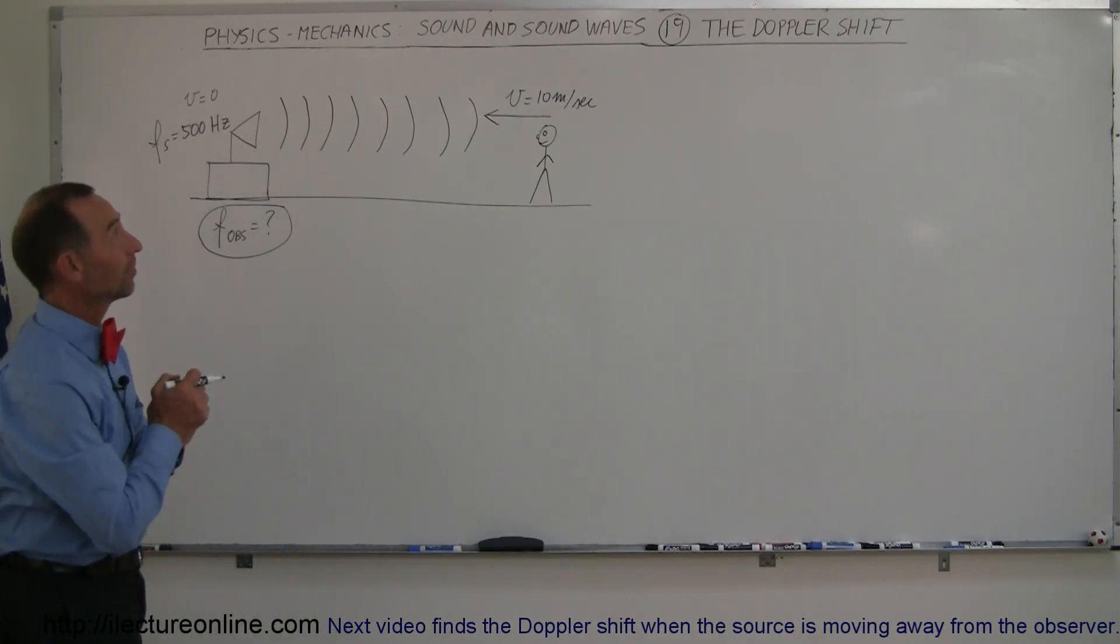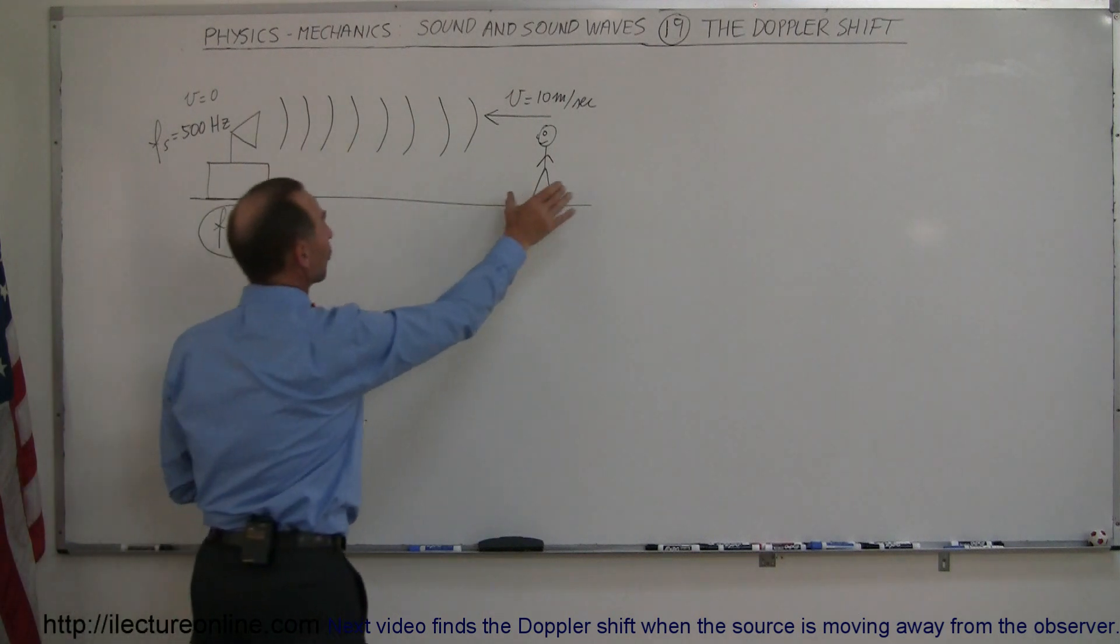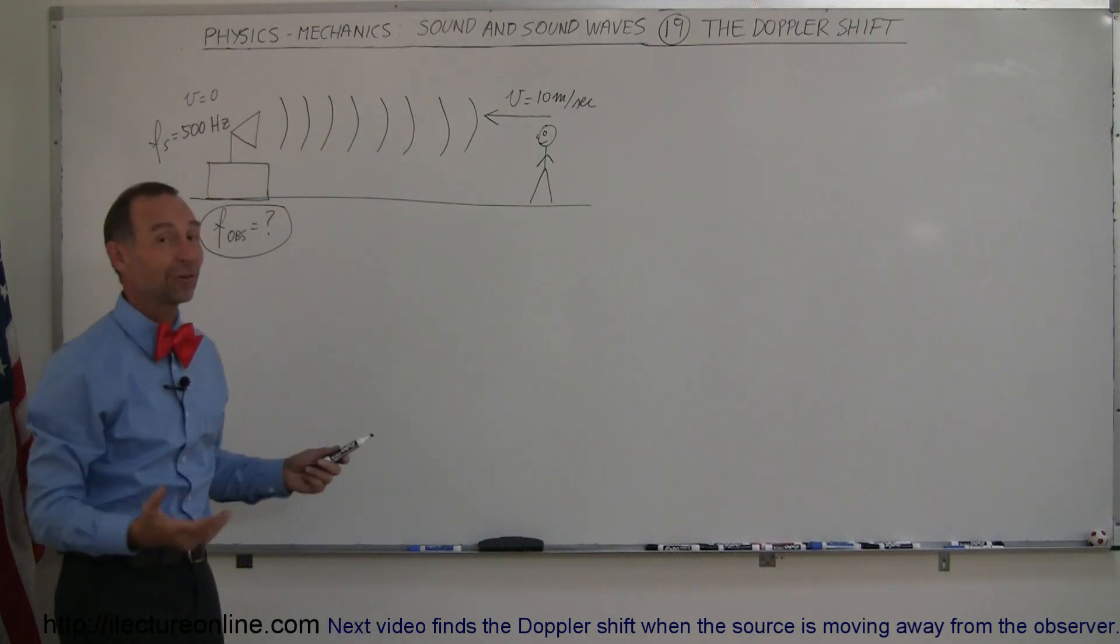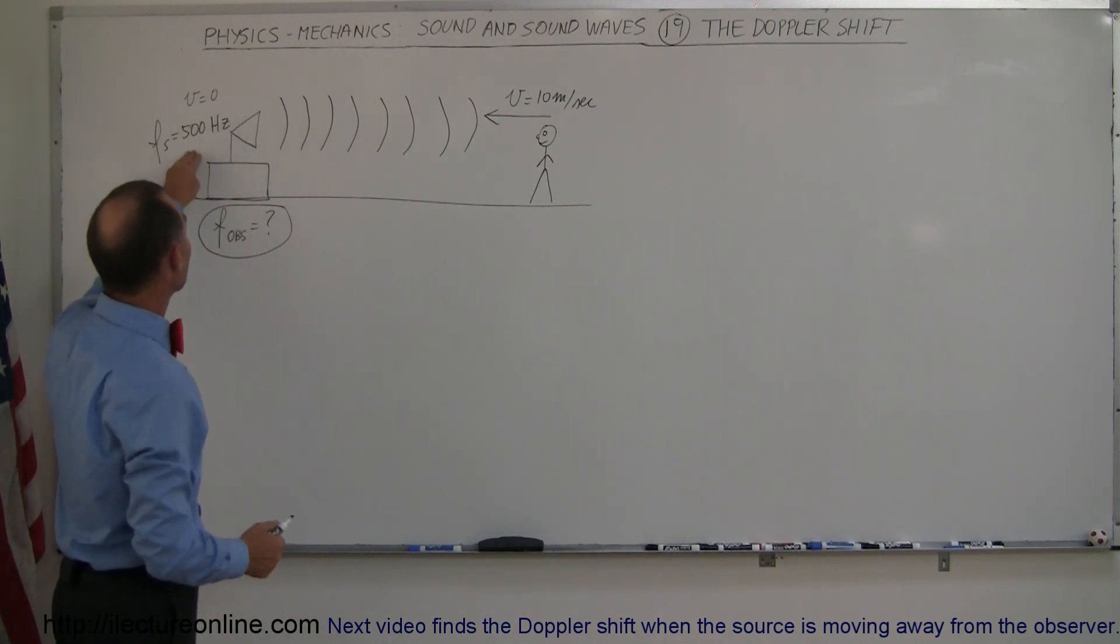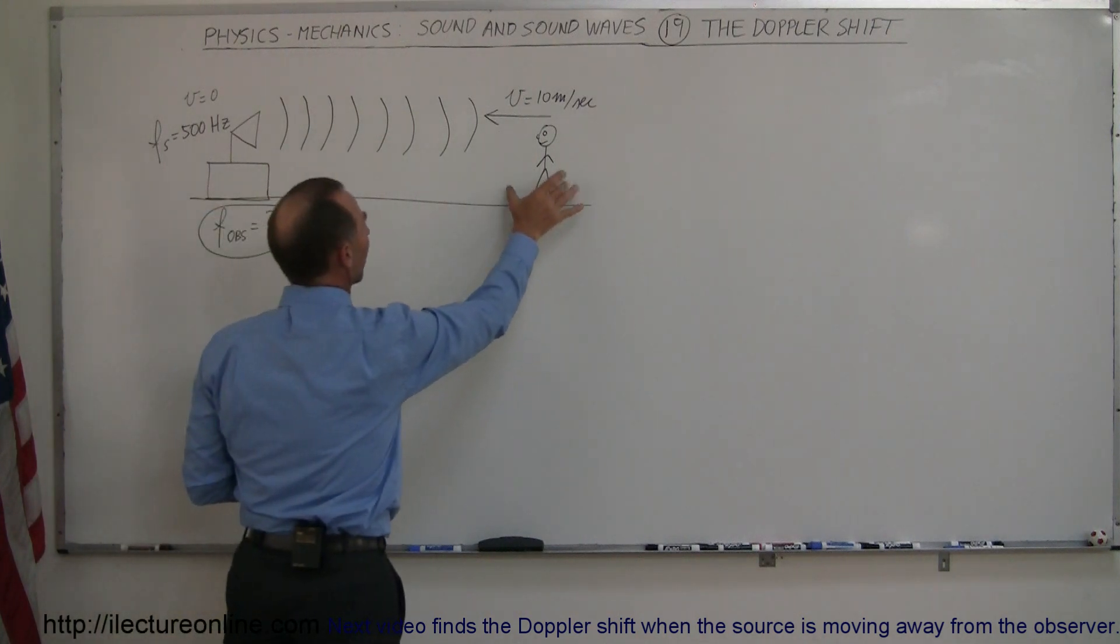Okay, in our next example on sound waves and the Doppler shift, we're going to have the observer walk towards the source. The source is going to be stationary, it took the wheels away so it can't move, and it's putting on a sound at a frequency of 500 Hertz. What frequency will the observer observe?